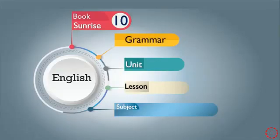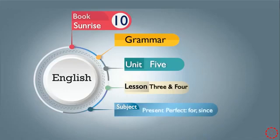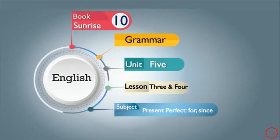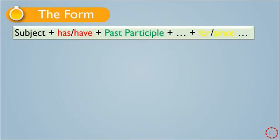Hello. In this grammar unit 5, lesson 3 and 4, I am again talking about present perfect — but this time using 'for' or 'since'. Listen carefully. In this video you will learn how to use 'since' or 'for' in the present perfect. The form is: subject + has/have + past participle + since or for.